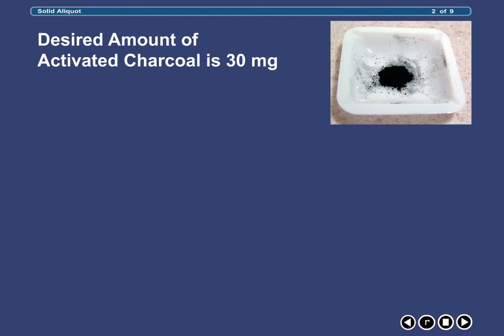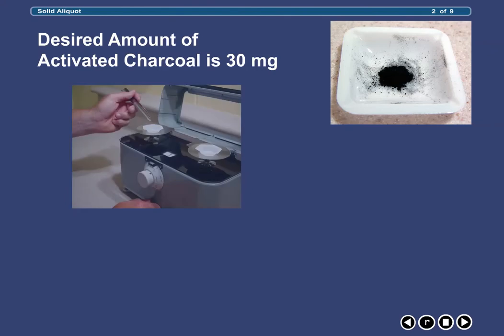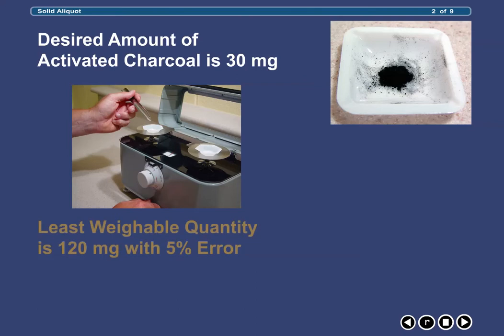Our pharmacy in this example, as is the case in many pharmacies, is equipped only with a Class A torsion balance. The smallest amount that can be weighed on this balance while maintaining a margin of error less than 5% is 120 mg.